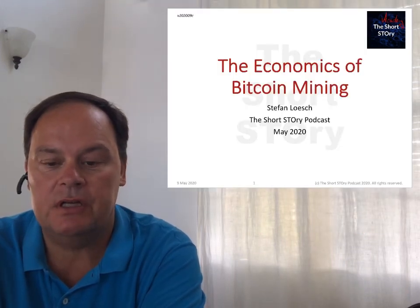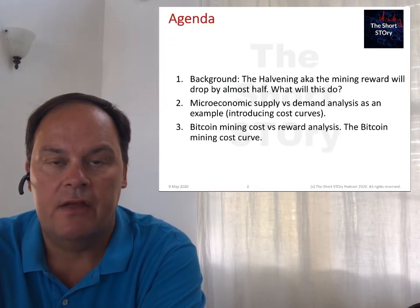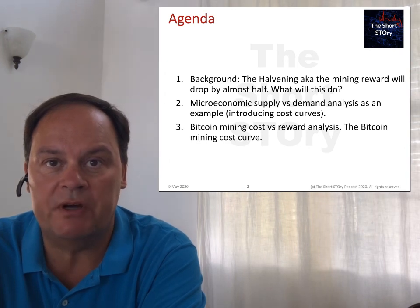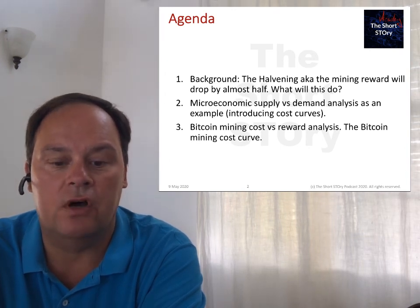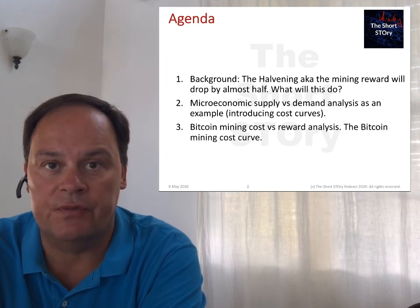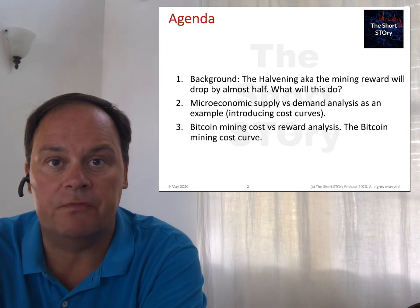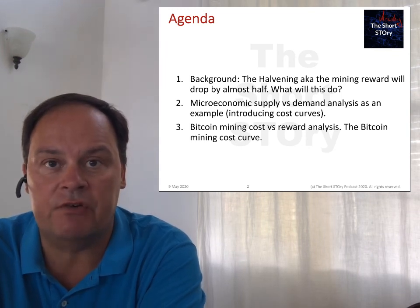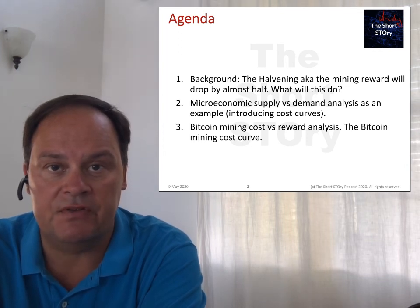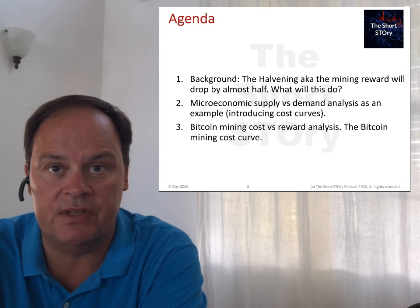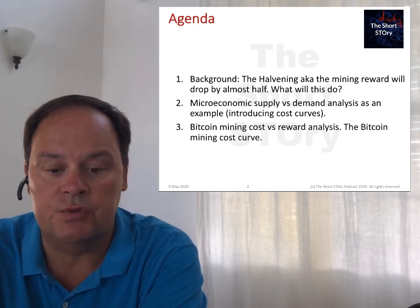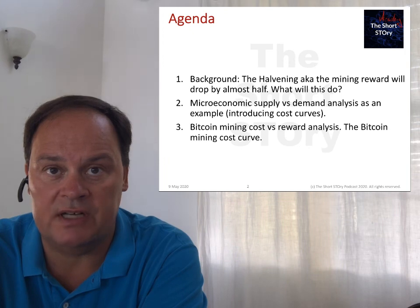The background. In a few days, there will be the halvening of the Bitcoin reward, meaning that the Bitcoin reward will drop by almost half of what it used to be. The question is, what will this do? In today's agenda, we're going to talk about the microeconomics of this. Before we go to the macroeconomics of Bitcoin mining, we're looking at the classic microeconomic analysis of supply versus demand, because the cost curve that goes with this is an excellent tool to deal with these kinds of issues.